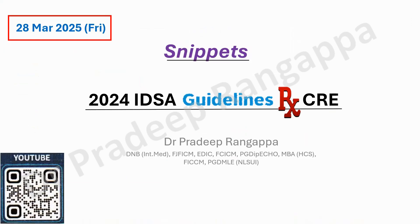Hello friends, I'll be covering this series on the 2024 IDSA guidelines as a snippet series. It's a 50-page document, but it's terribly important that we have some homogeneity in our prescription practices adhering to the core principles of evidence. Today I'll be talking about CRE — carbapenem-resistant Enterobacteriaceae — which is very common in the ICU, specifically the choice of antibiotics for CRE in UTI.